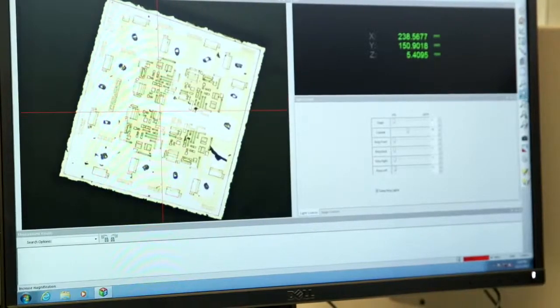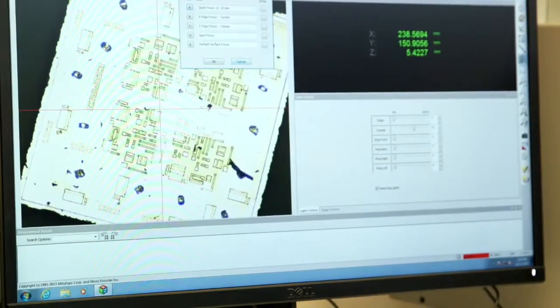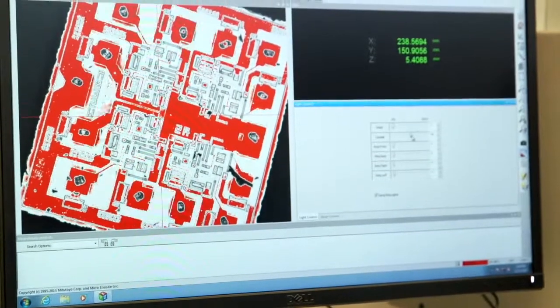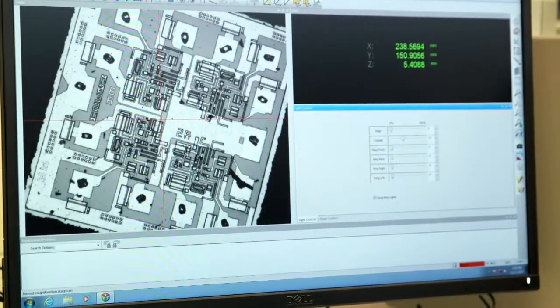The inspection program allows the machine to find the pattern on the substrate using automatic pattern recognition, take measurements, and record images automatically.